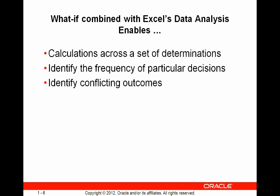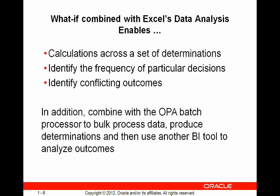You can identify conflicting outcomes, for example by creating a rule that tests for the offending combinations of conclusions, then using that conclusion as an outcome in a what-if analysis and checking whether the offending outcome is ever concluded. In addition, use the batch processor to bulk process data, produce decisions, and use any other business intelligence tool to analyze outcomes.